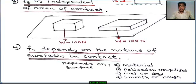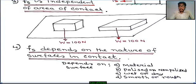Number one: material. Wood to wood, wood to rubber, wood to glass — the coefficients of friction are different. Frictional force also depends on whether the surface is polished or non-polished; the coefficients of friction are different for polished versus non-polished surfaces.